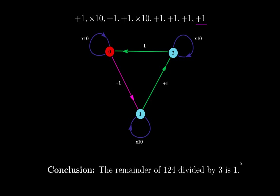You might have questions about this. How did we know this is the automaton of divisibility by 3? What if you want an automaton of divisibility by 4, by 5, by 6, and so on? To do that, you follow an algorithm — given any number, you can construct an automaton that gives divisibility by that number. But that will be a topic for the next video.